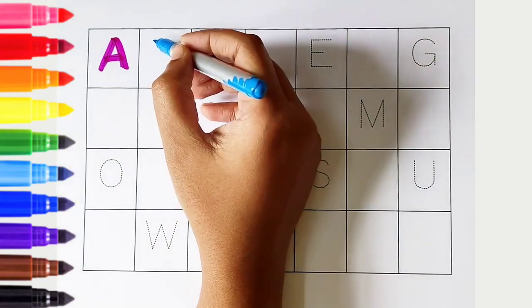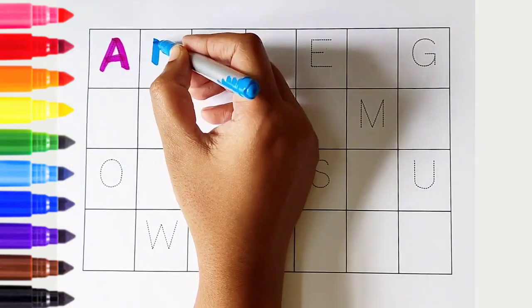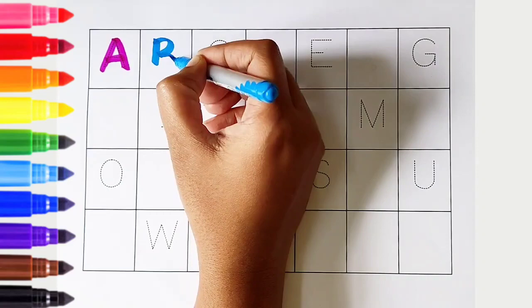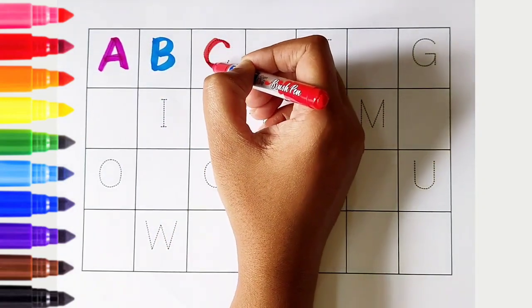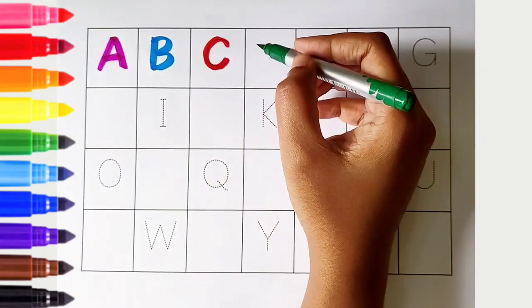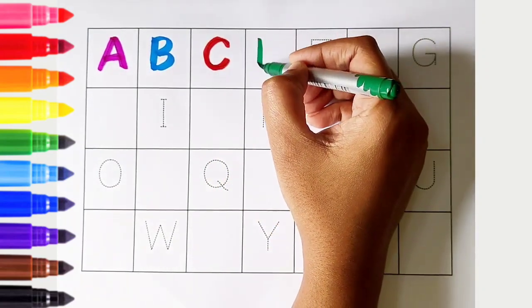B, light blue color, B is for balloon. C, red color, C is for cat. D, dark green color...